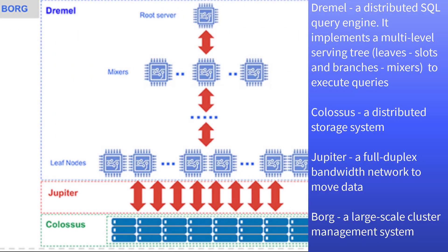Here is the summary. Dremel is a distributed SQL query engine that can perform complex queries over data stored on GFS, Colossus, and others. The client applications interact with the Dremel engine via the client interface. Dremel uses a multi-level serving tree to execute queries. The leaves of the tree are slots, which do the heavy lifting of reading data from the distributed storage system and performing any necessary compute.